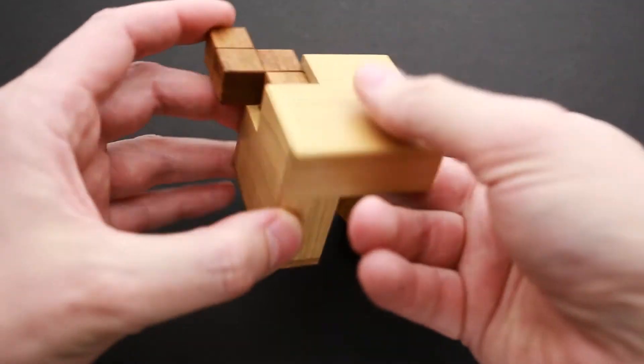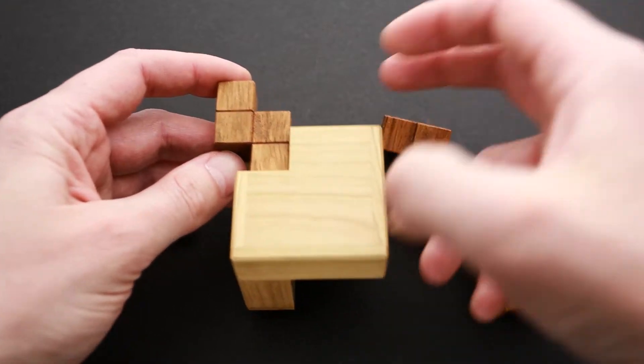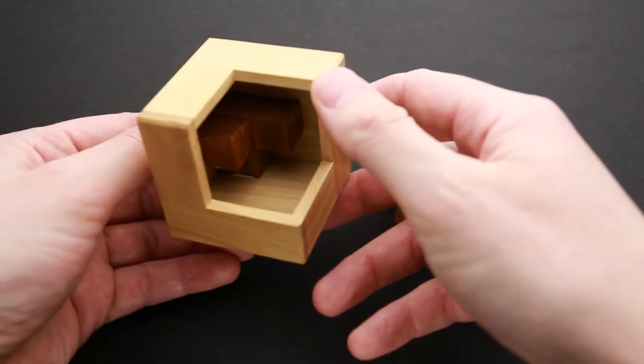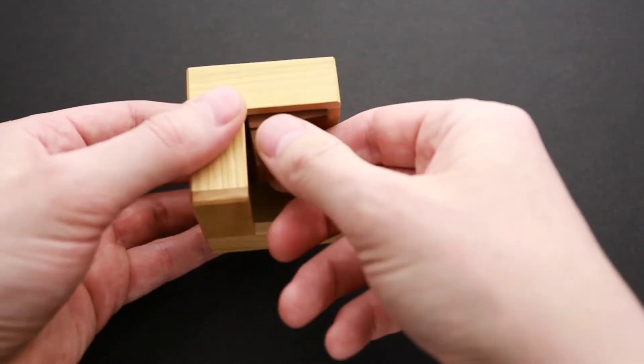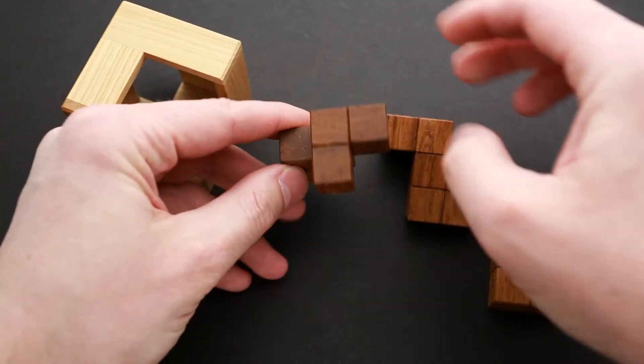As you can see, if I put it this way, there is a huge part of this piece sticking out. So we're going to use it to solve the puzzle. It means that this piece is going to be this way.